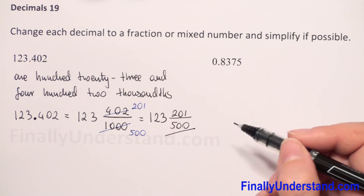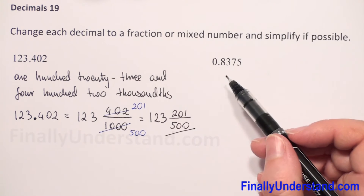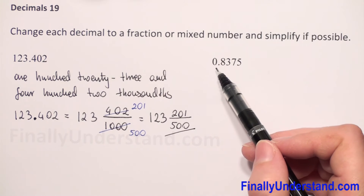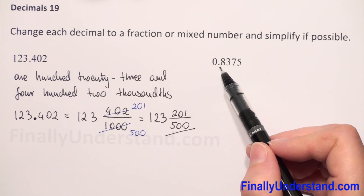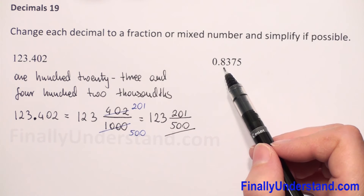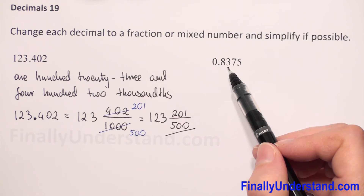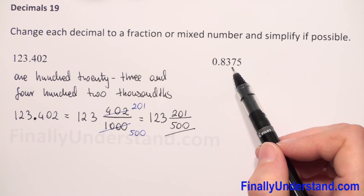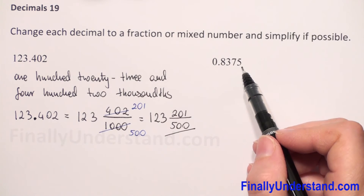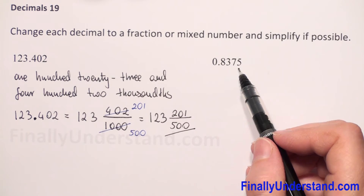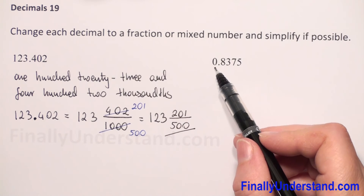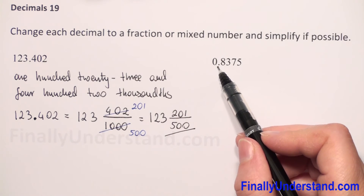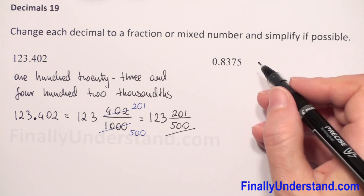The second example is 0.8375. We read this number as eight thousand three hundred seventy-five ten-thousandths. We don't have a whole number because we have zero before the decimal point.